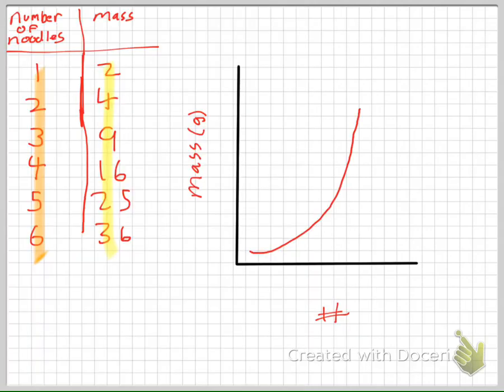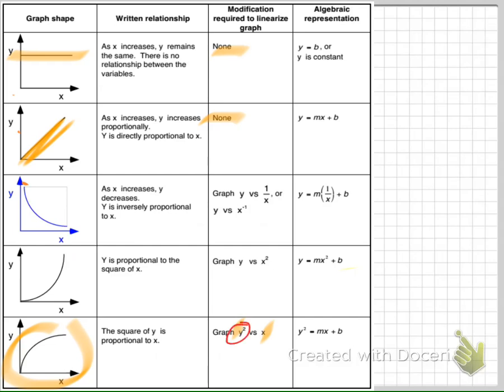So if you were to go back to our data here, in this situation, the x's will stay the same. The y's, we would have ended up squaring. Hopefully this makes it a little bit more clear, and if you have any questions, just submit a question on Edmodo, and I will do what I can to help you out. Thank you.